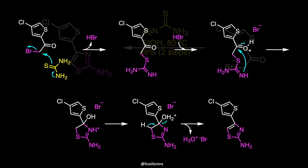Carbonyl groups are hard electrophiles and react well with basic hard nucleophiles. Alkyl halides are soft electrophiles and react best with large, soft, and charged nucleophiles from lower down in the periodic table. So, the ketone reacts with the nitrogen and the alkyl halide reacts with the sulfur.